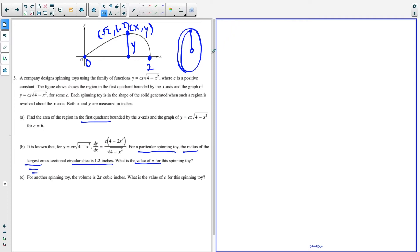So now for the last part, for part C here, they're telling us that for another spinning toy, the volume is two pi cubic inches, and we want to find the value of C for this toy. So the idea for this, we kind of had this idea in part B that we drew one of the cross-sectional slices by spinning around the x-axis.